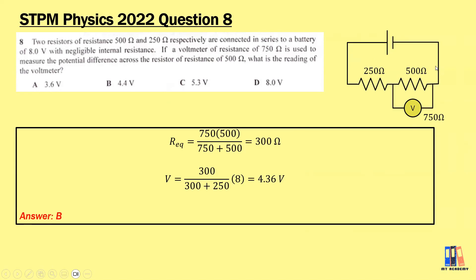The first step is to find the equivalent resistance of 500 ohm and 750 ohm in parallel. The effective resistance becomes 300 ohm — quite different from 500 ohm. We then apply the potential divider formula treating this as 300 ohm. So it is 300 over the total resistance, multiplied by 8 volt, giving a voltage reading of 4.36 volt. Answer is B.